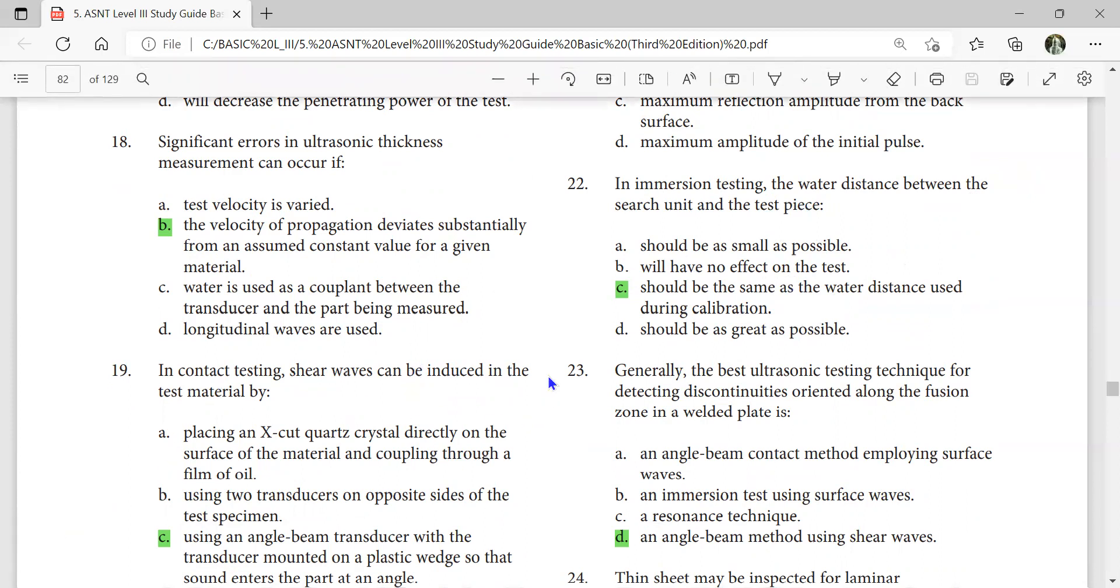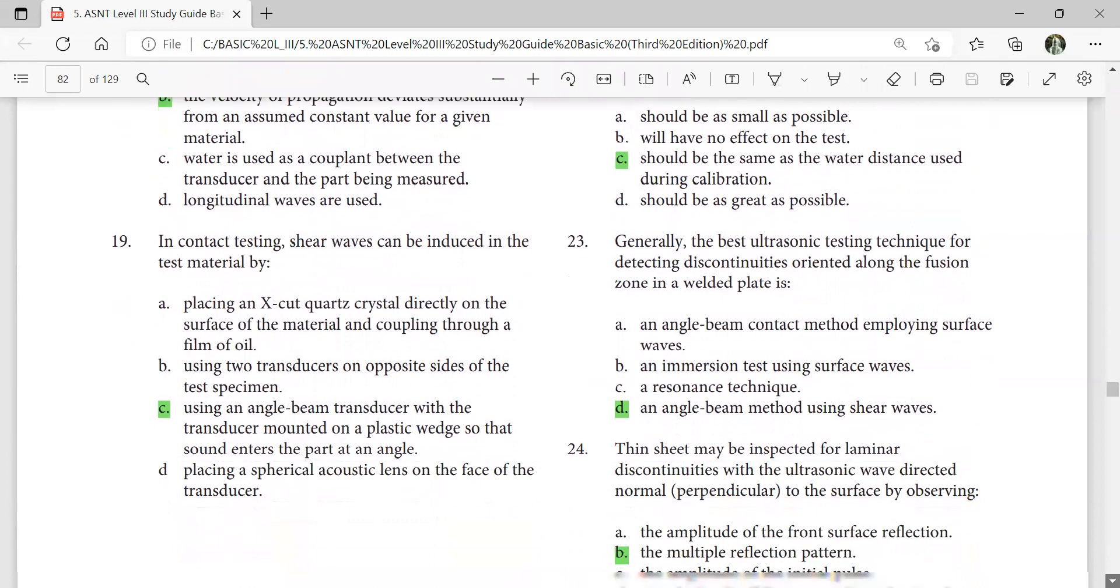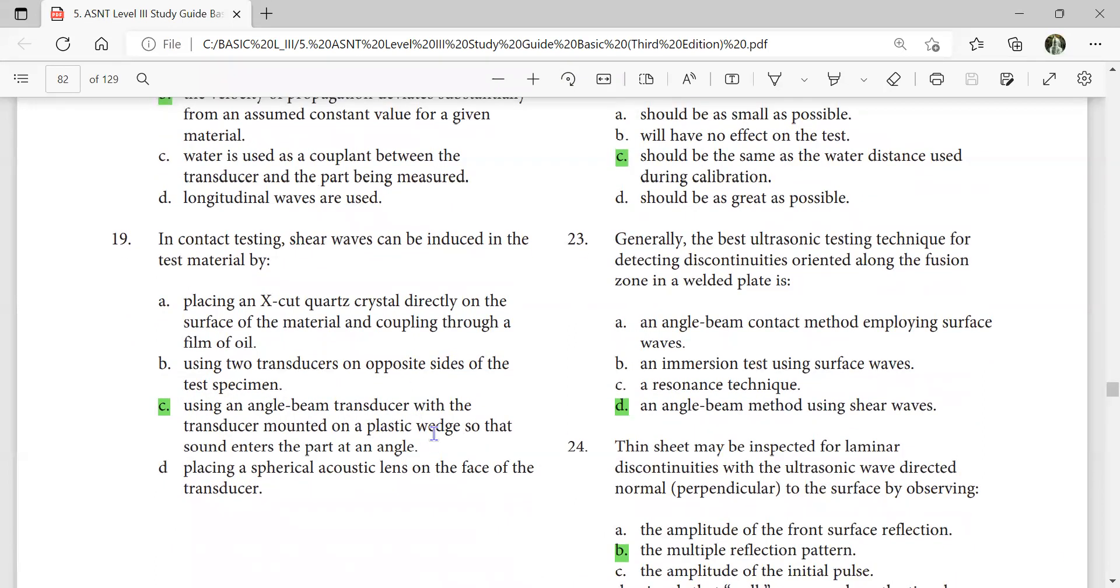In contact testing, shear waves can be induced in the test material by using an angle beam transducer with the transducer mounted on a plastic wedge so that sound enters the part at an angle.